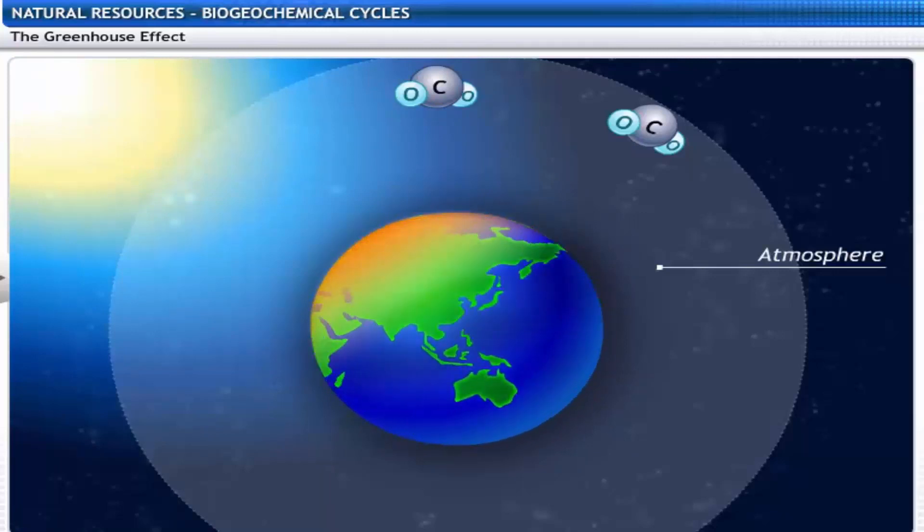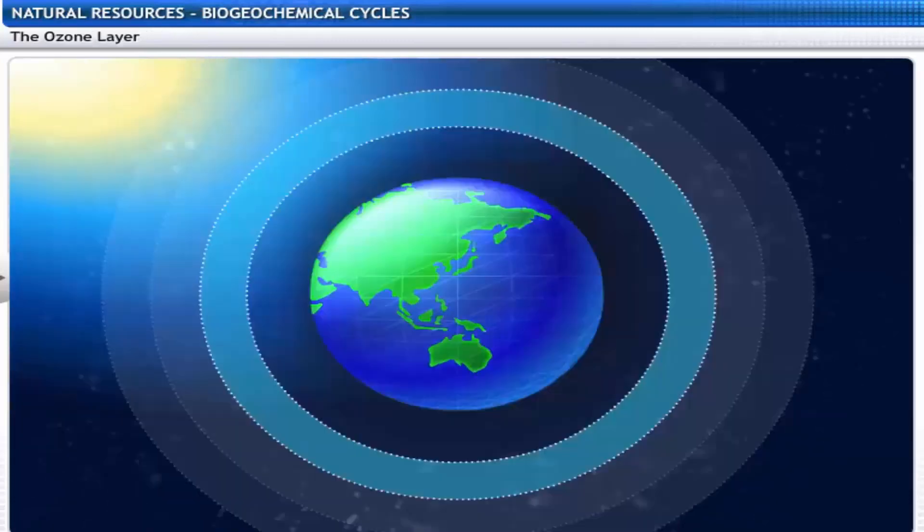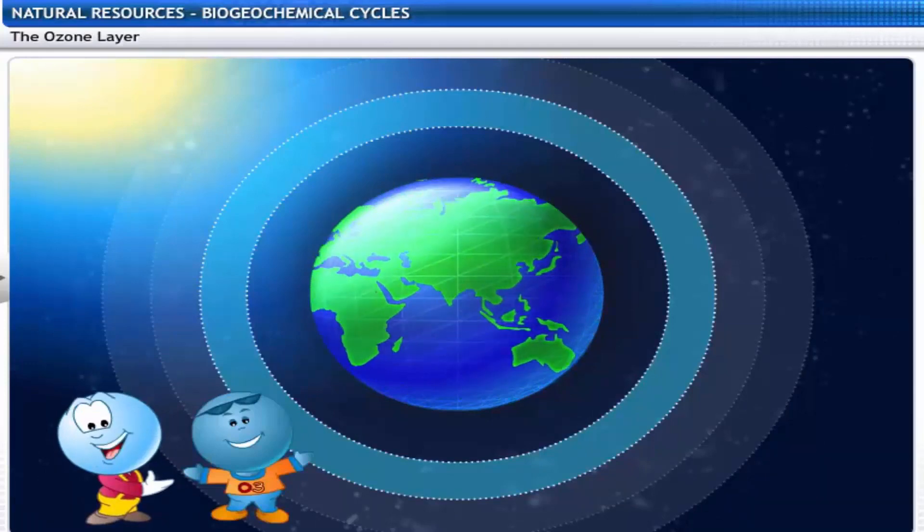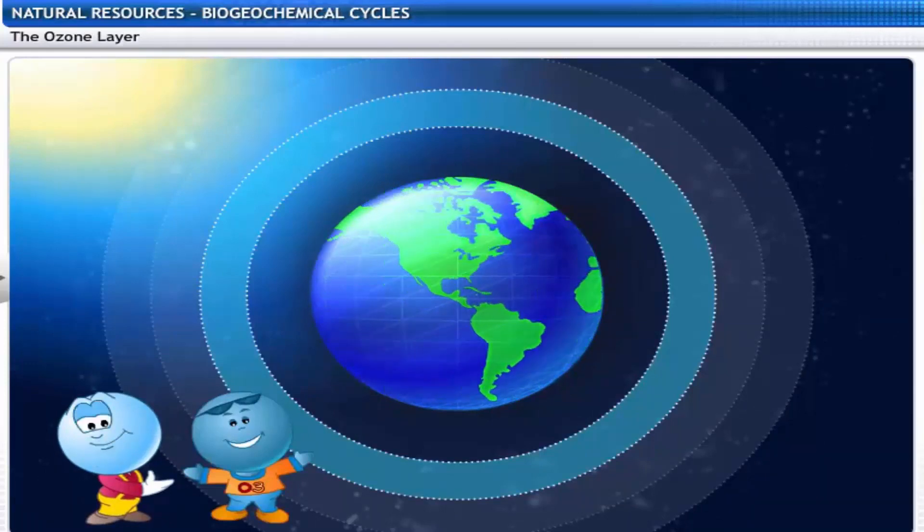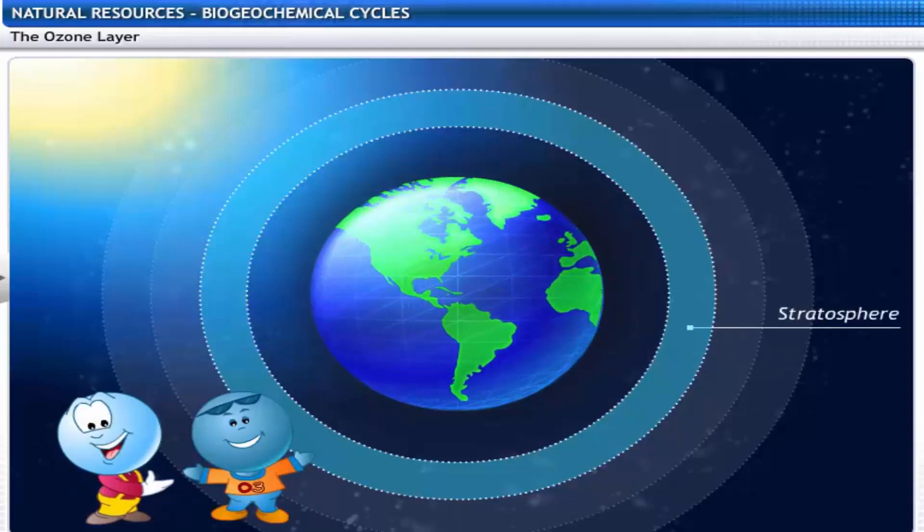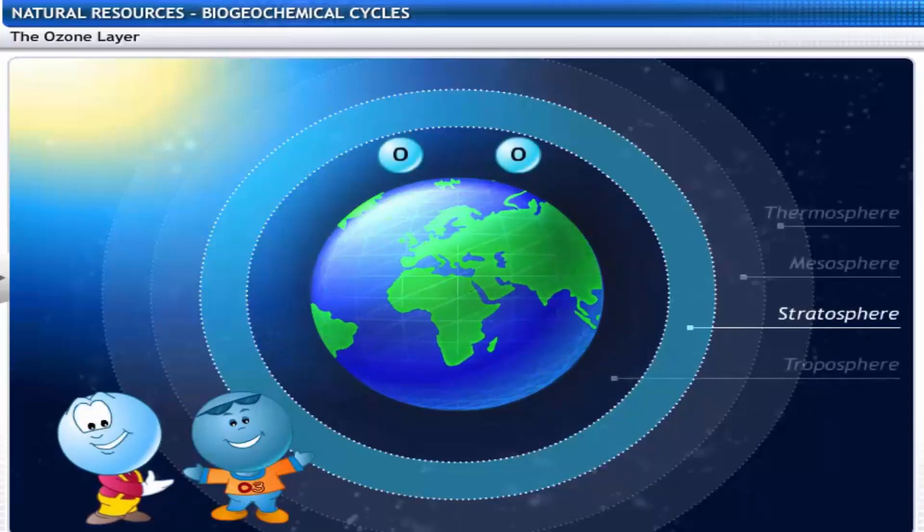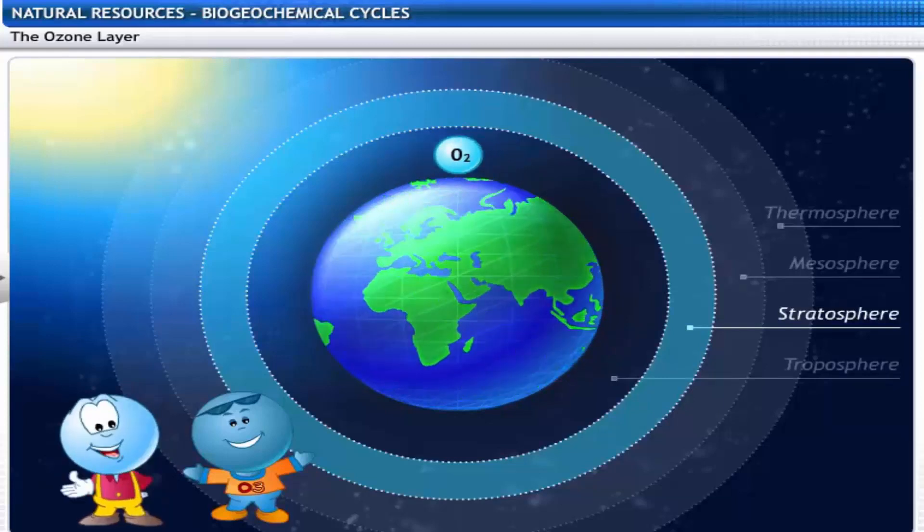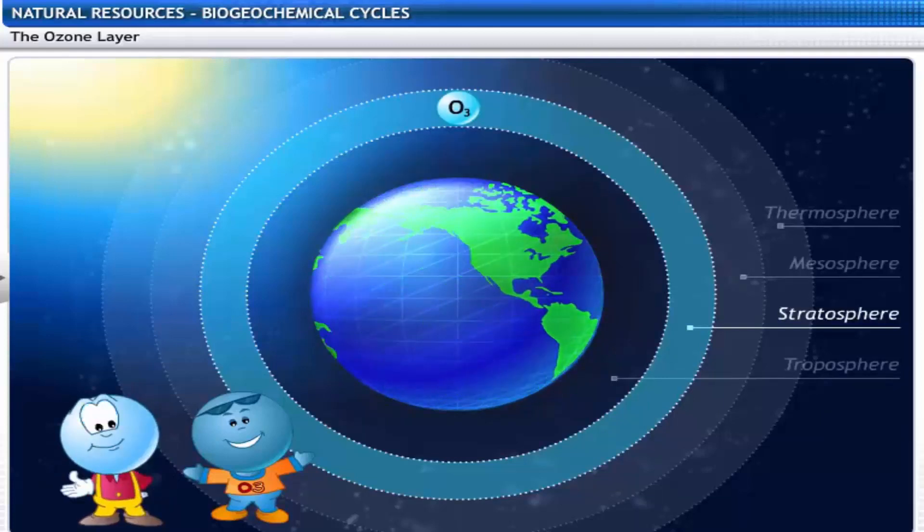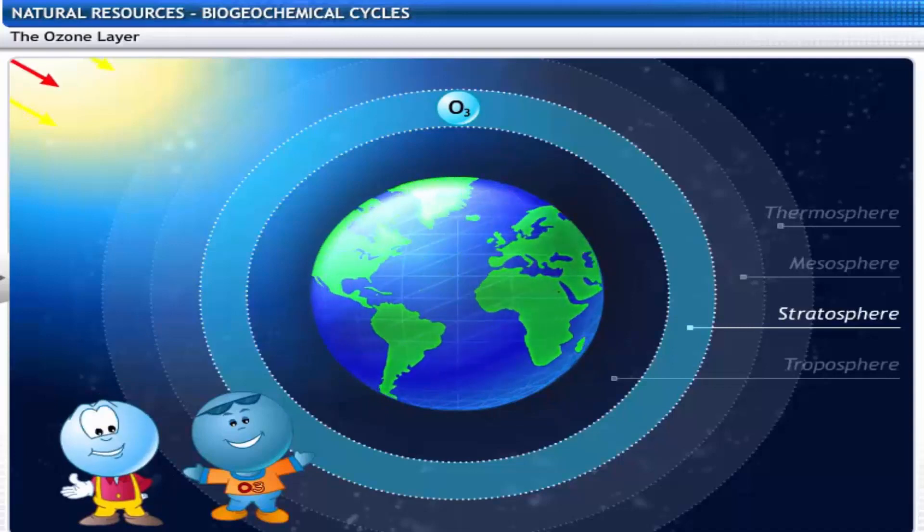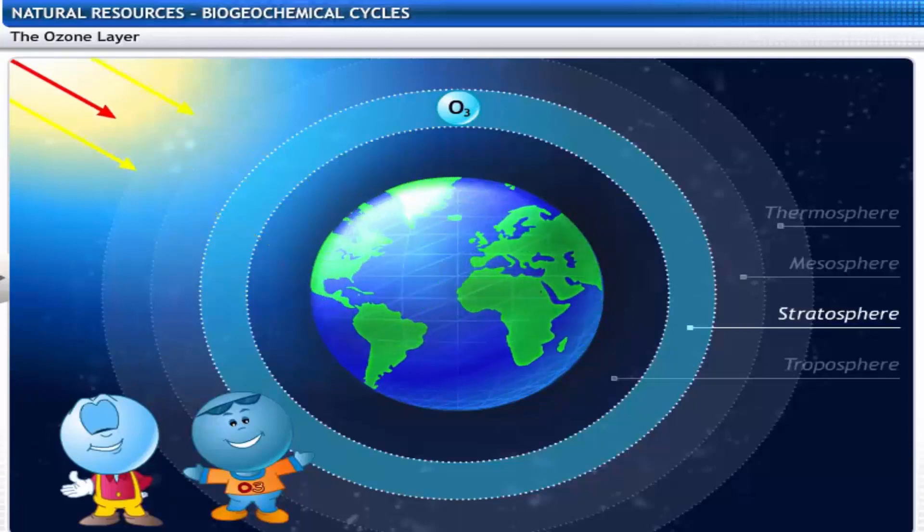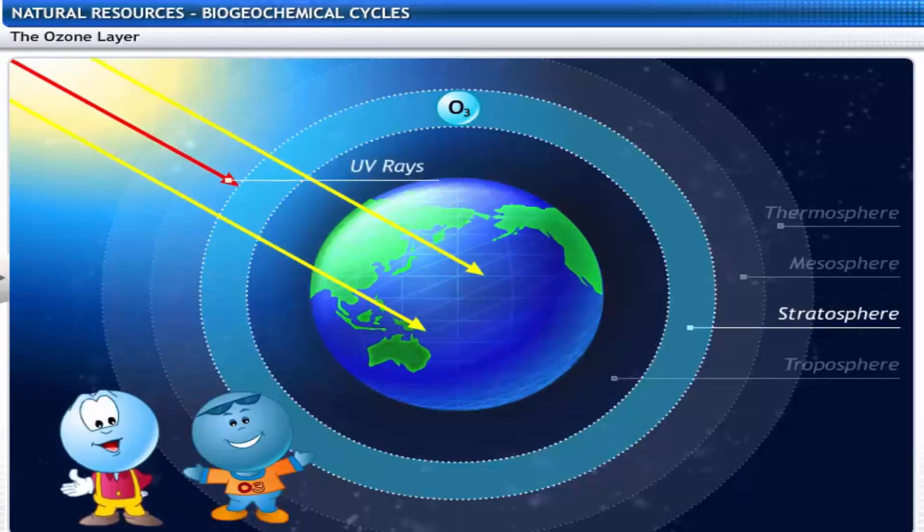Hi buddy, meet my good friend Ozone. He lives in the upper layer of the atmosphere known as the stratosphere. Atmospheric oxygen contains two oxygen atoms while the ozone has three. The ozone absorbs harmful ultraviolet radiations from the sun. This prevents the radiations from reaching the earth's surface where they might damage life forms.